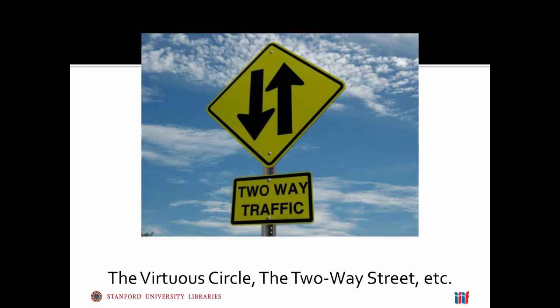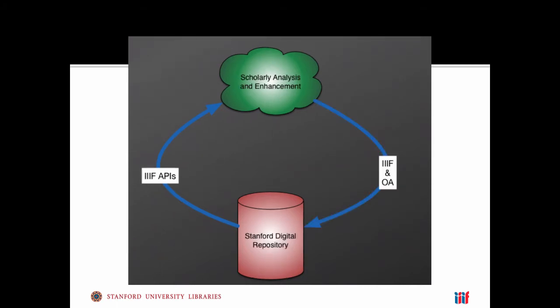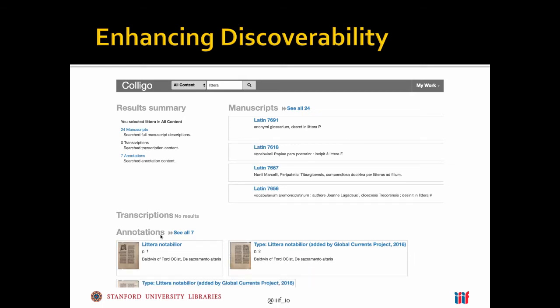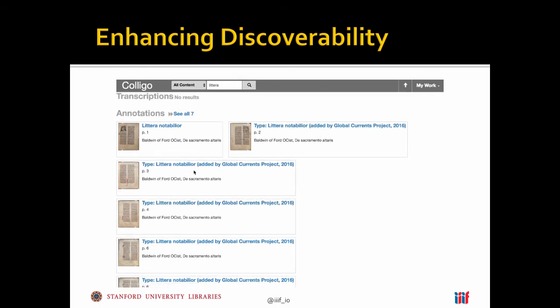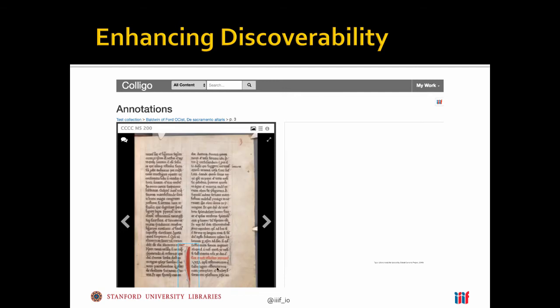How do we get to the two-way street? Aside from pushing material out to repositories, how do we bring it back in? IIIF gives us an opportunity to do this, and we've been experimenting in the manuscript space because it's a fairly constrained space and we know a number of the scholars working there. We can use those same IIIF APIs and open annotation to bring that material back into the repository and then start building discovery interfaces on top of it. Moving back to that discovery interface—if I wanted to find all of the annotations produced by the Global Currents project, I now have those annotations in our repository.